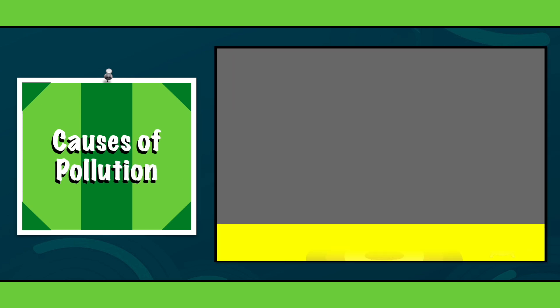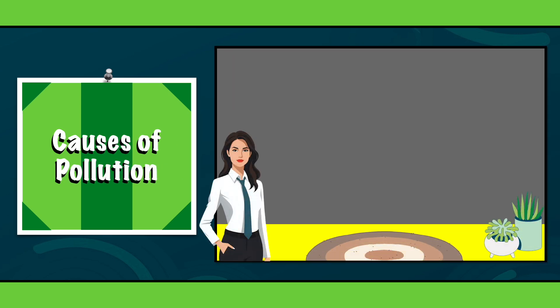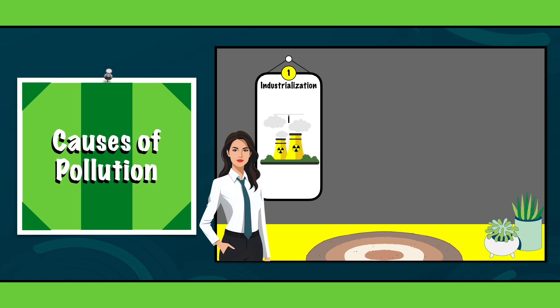Now that we have explored the different types of pollution, let's take a closer look at the primary contributors. These are: 1. Industrialization. Factories and manufacturing plants are significant contributors releasing harmful pollutants into the air, water and soil during production processes.